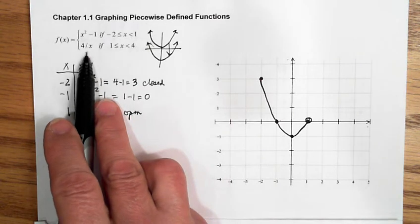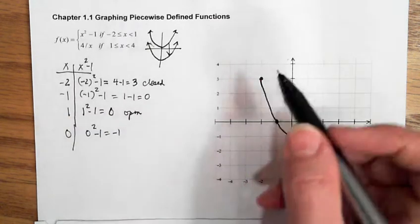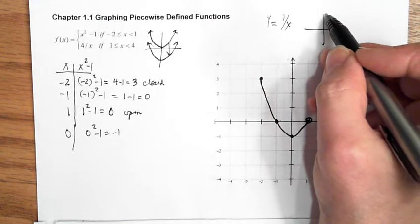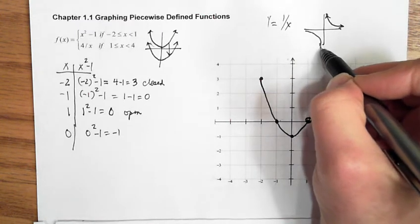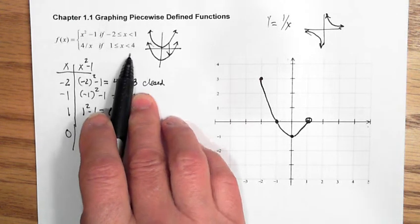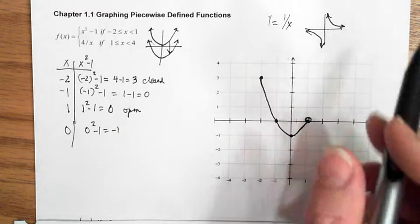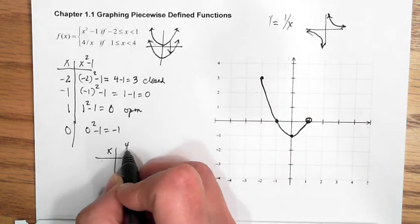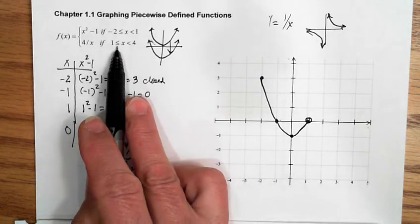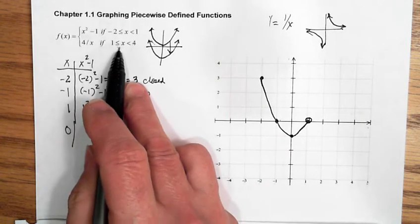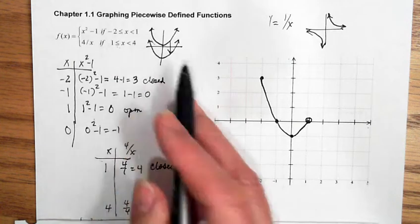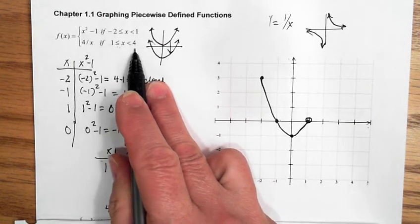The second piece, 4/x, is also like one of the parent graphs. When we had f(x) = 1/x, that looked like a hyperbola — one part in the first quadrant. We're looking at a section in the first quadrant here. In the t-diagram: at x = 1, 4/1 = 4, and that first endpoint is closed because of the equal sign. The second endpoint is at x = 4: 4/4 = 1, and that endpoint is open because x < 4 is a strict inequality.